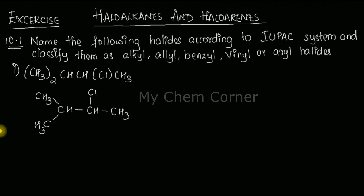Now for naming, since we have a halogen present, we give it the lowest possible number. If we count from the left, chlorine would get position 3 and 4, which is higher. So we count from the right side to give the functional group the lowest number. Counting from the right gives chlorine the lower number, so we number from the right-hand side.